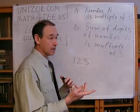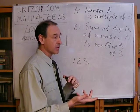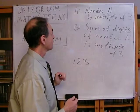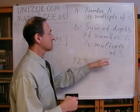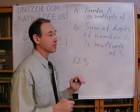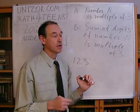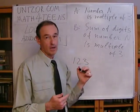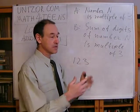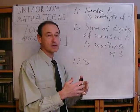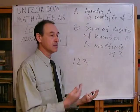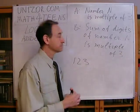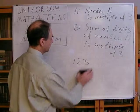If we can also prove the theorem that from B follows A — so if the sum of digits is a multiple of 3, then the number is a multiple of 3 — then it proves that B is also a sufficient condition for A. In this particular case it goes both ways, and we can say that A and B are both necessary and sufficient conditions for each other. Let's try to prove it.